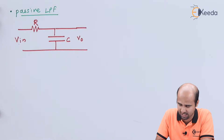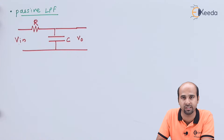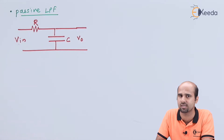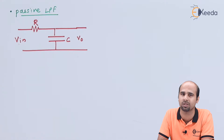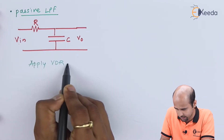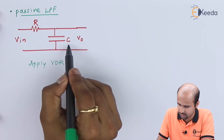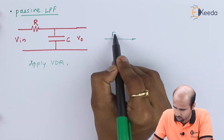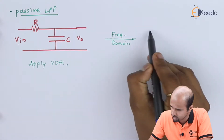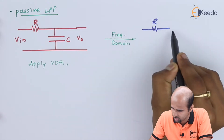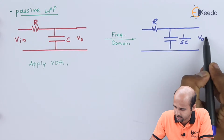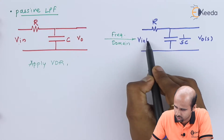I want to derive the mathematical expression in the form of the ratio of VO to VIN, that means what is the variation of the gain with respect to frequency. As far as frequency is concerned, only one responsible parameter is there — the capacitor — because the resistor is independent of frequency. We will apply the voltage divider rule, VDR. First we will convert it into the frequency domain. R will remain R, and C will become 1 upon SC. This will become R, this will become 1 upon SC, and here we will get the output in the form of S and input in the form of S.